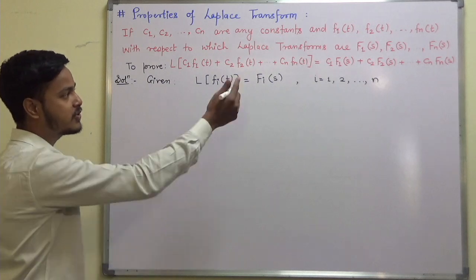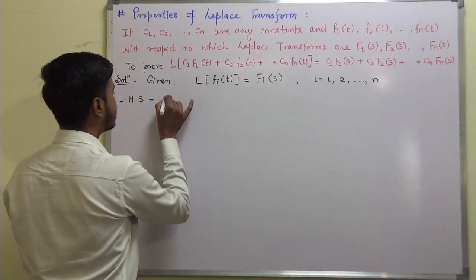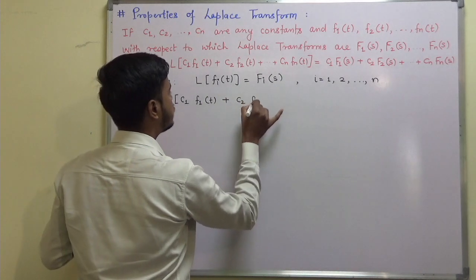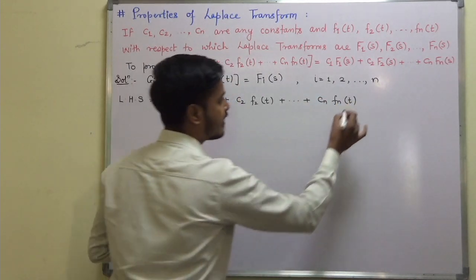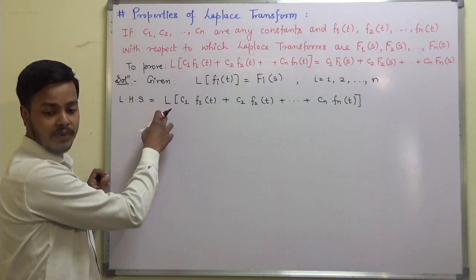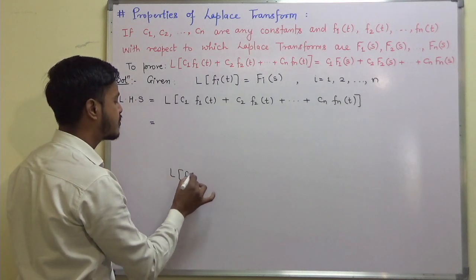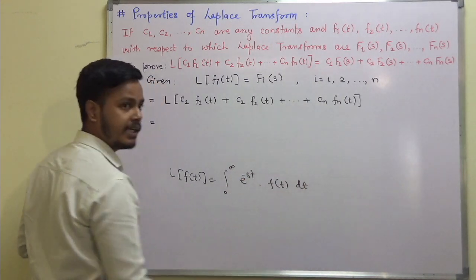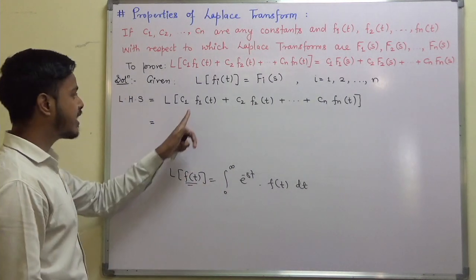The left hand side is the Laplace transform of c1·f1(t) + c2·f2(t) + ... + cn·fn(t). Now, apply the Laplace transform using its definition. The definition states: the Laplace transform of f(t) equals the integral from 0 to infinity of e^(−st)·f(t) dt. Here, in place of f(t) we substitute the bracketed quantity.